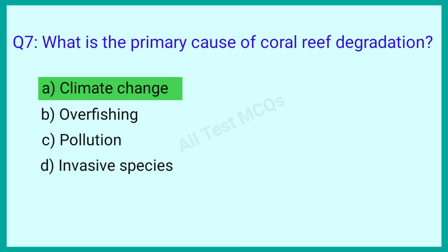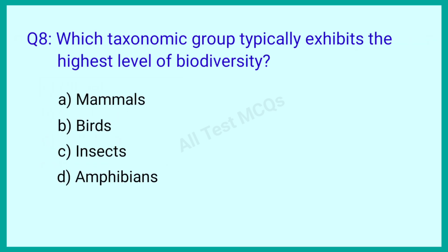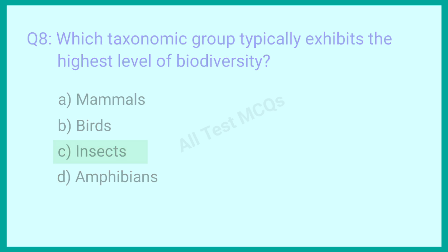Question number 8: Which taxonomic group typically exhibits the highest level of biodiversity? The correct answer is option C: Insects.